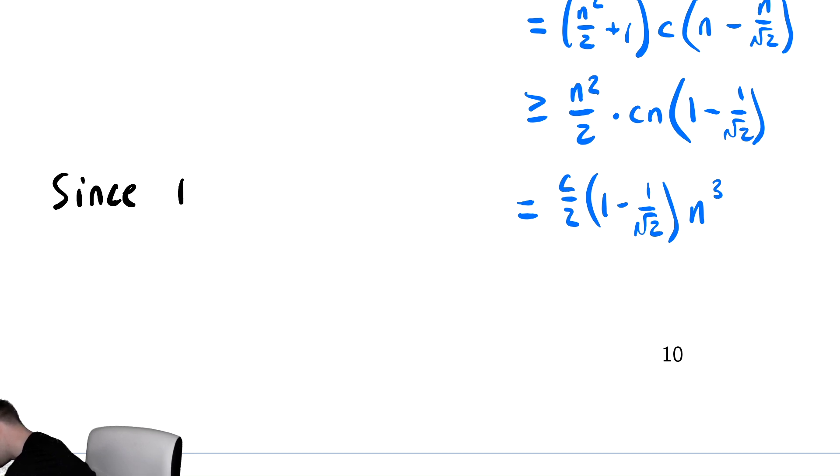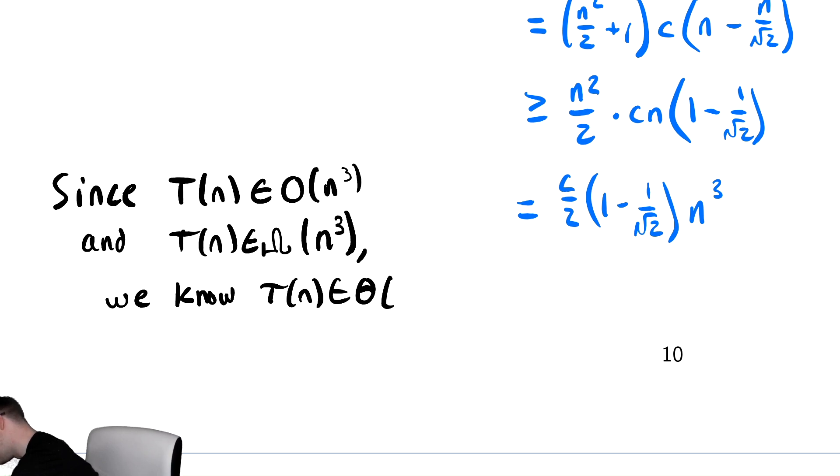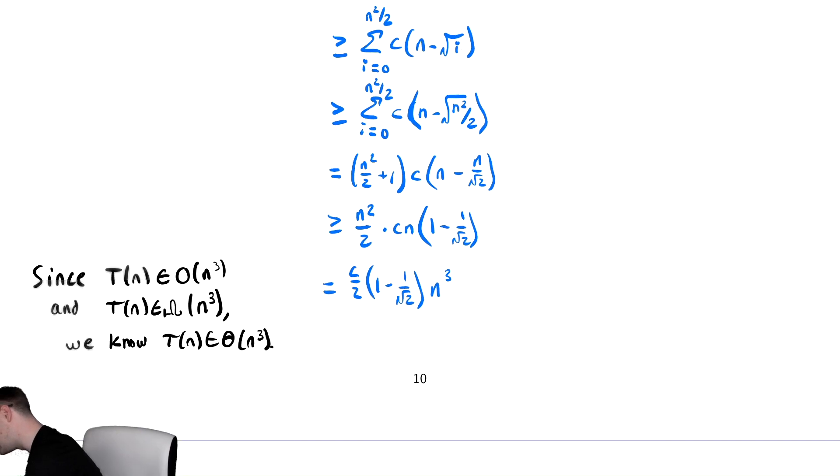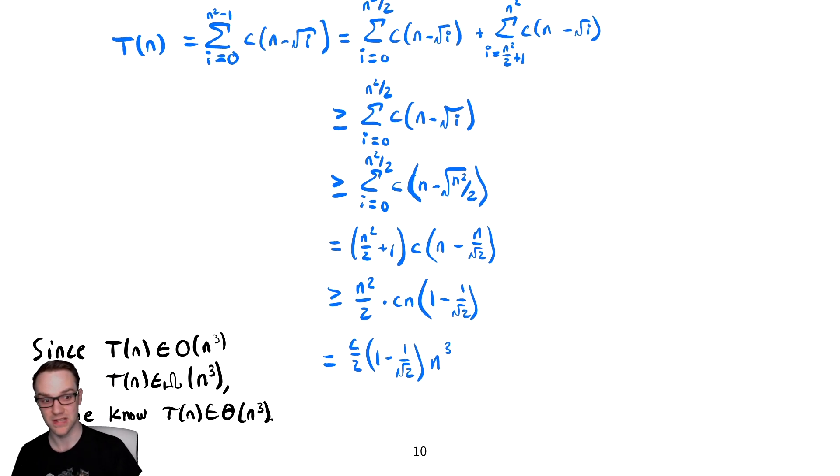So since T(n) is in big O of n cubed and T(n) is in big omega of n cubed, we know T(n) must be in theta of n cubed. So this problem showed us how to deal with decreasing summations again, which we've seen already in our previous videos on summations, and it showed us how to ignore the floor function. In the future, we are just going to strictly ignore that going forward.